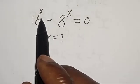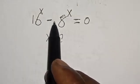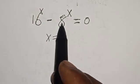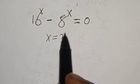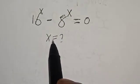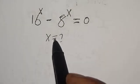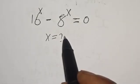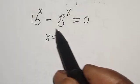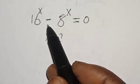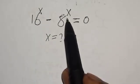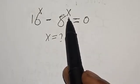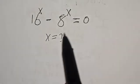16 raised to power x minus 8 raised to power x is equal to 0. What is the value of x? Hi everyone, welcome to my class. In this class, we want to find the value of x from this given equation: 16 raised to power x minus 8 raised to power x is equal to 0.